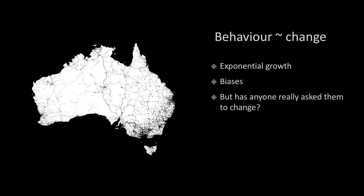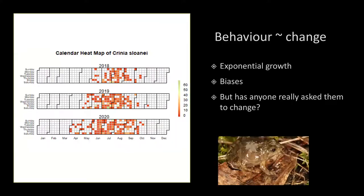These biases are assumed to be part of citizen science programs — larger with unstructured programs and more surmountable with structured ones. Currently, the extent to which people are willing to alter their behavior for a project is largely unknown. eBird data is essentially a de facto map of metropolitan areas and road networks in Australia, because that's where people are. We want to know if, when prompted, people would collect data from the gaps. For temporal gaps, a multi-year heat map of Crinia sloanei frog calls shows that 2018 looked like they don't call in May — but with more effort, we see they do call in May and April.